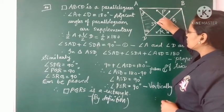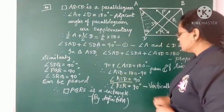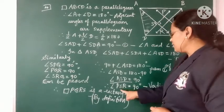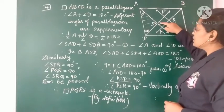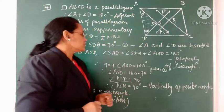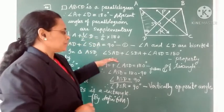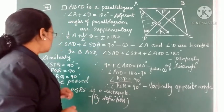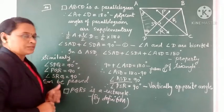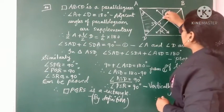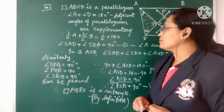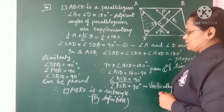We have proved angle ASD = 90°. Since angle PSR is the vertically opposite angle to angle ASD, angle PSR = 90°. So in quadrilateral PQRS, one angle is proved to be 90°. Similarly, by taking other pairs of adjacent supplementary angles and applying the triangle property, we can prove that angles SPQ, PQR, and SRQ are also each 90°. All four angles of quadrilateral PQRS are right angles.